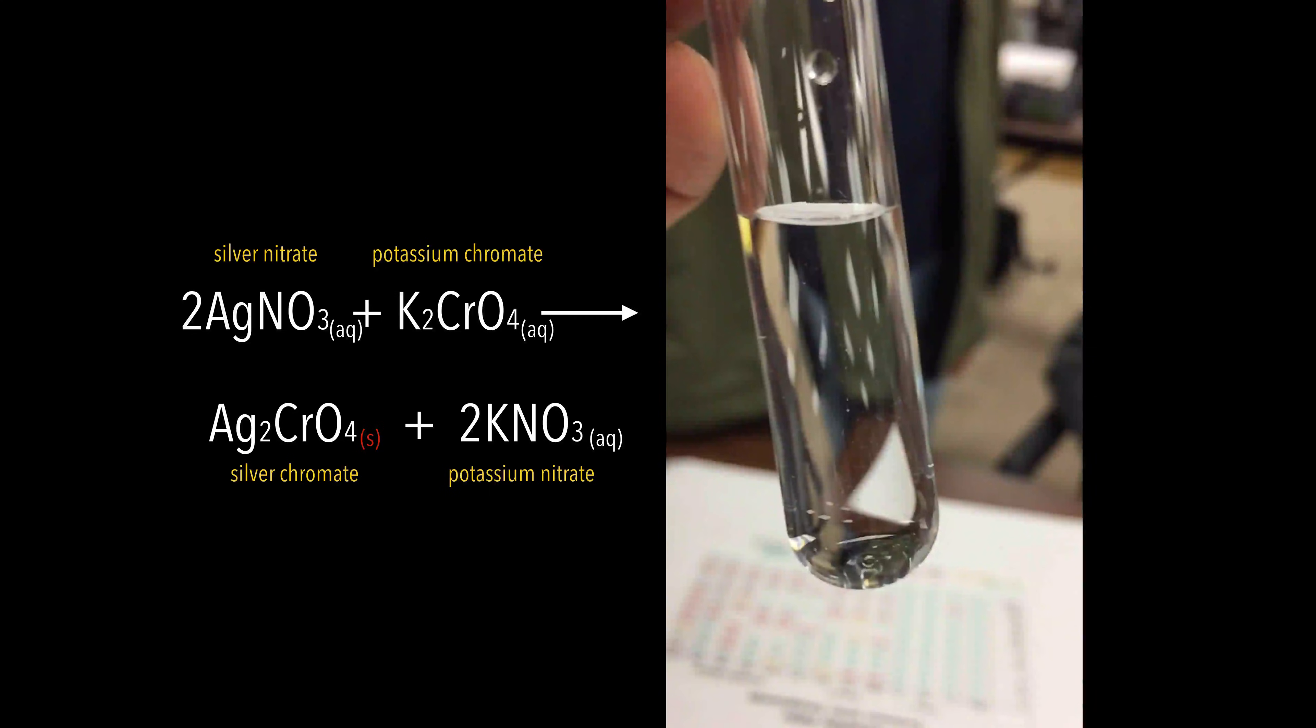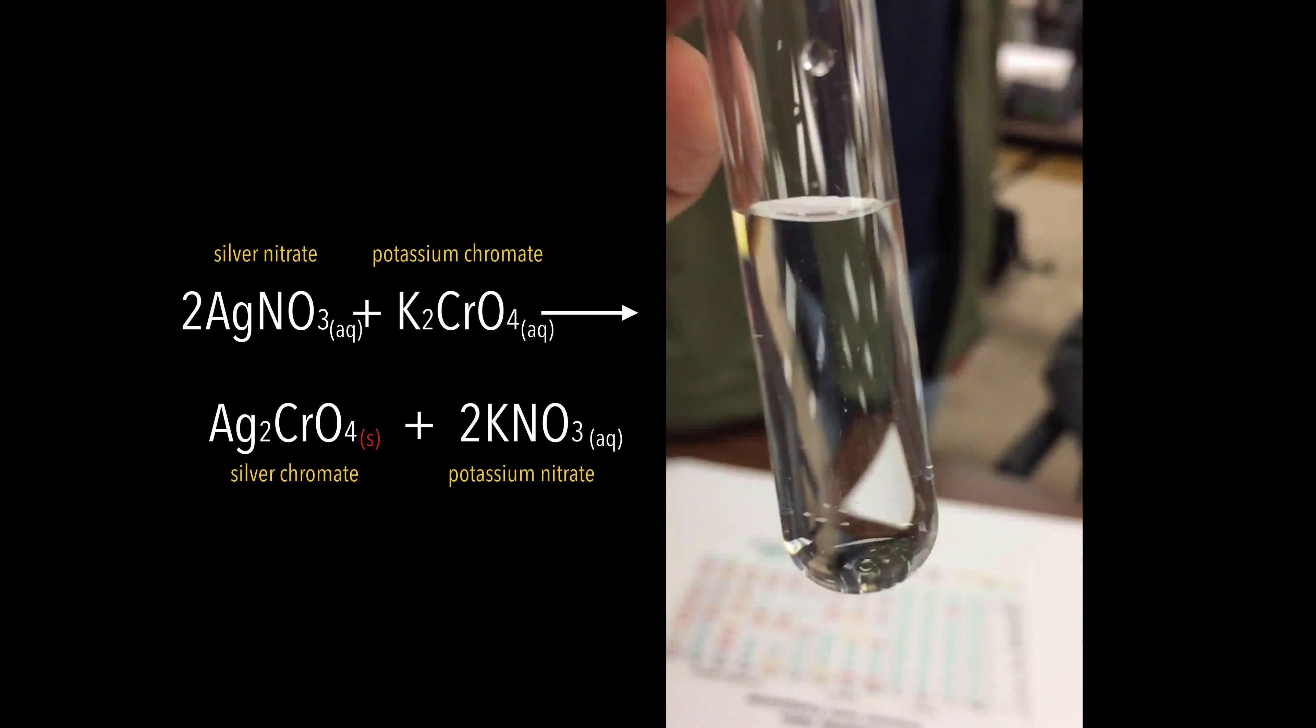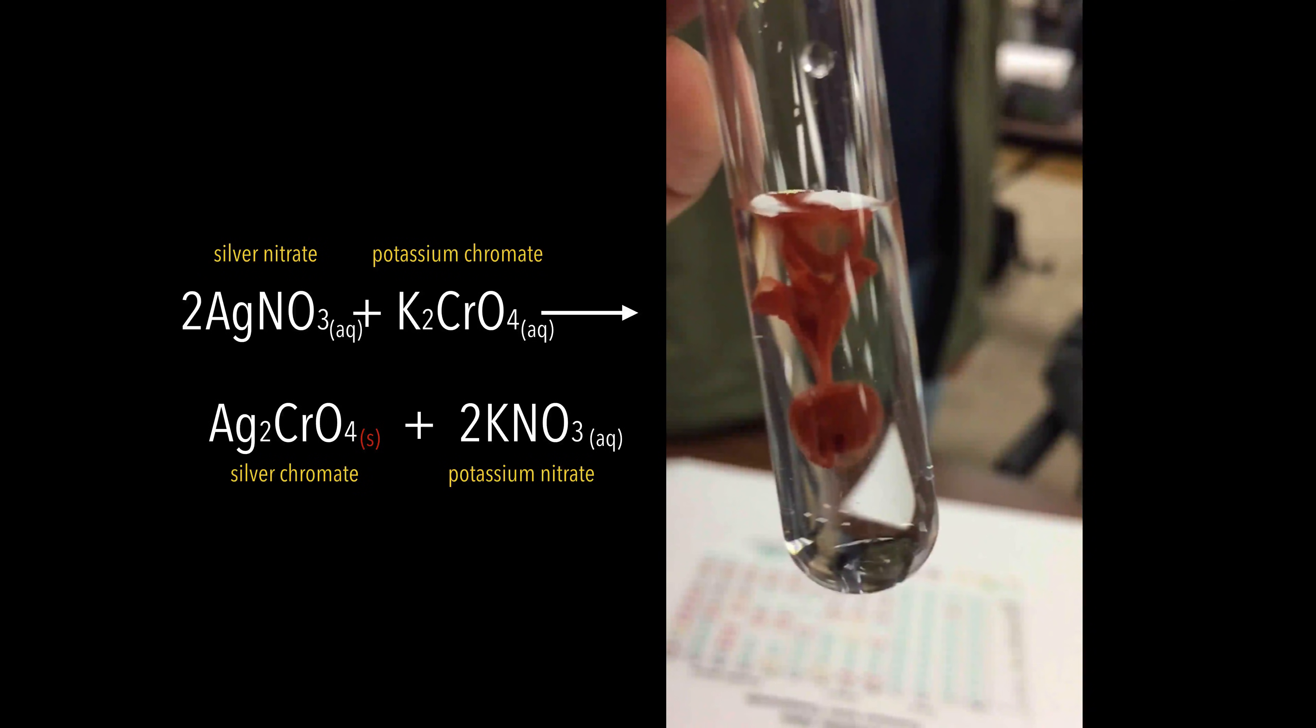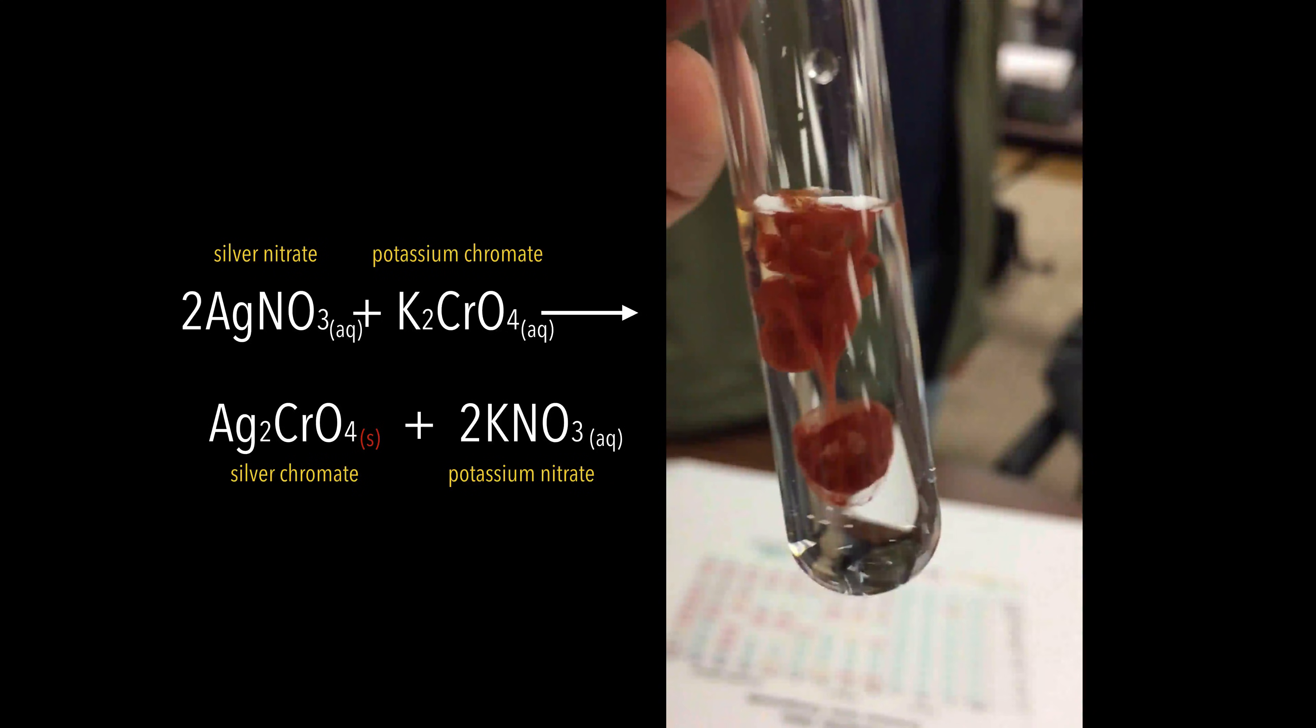Silver nitrate is what you see right now. We're going to blend in potassium chromate. Actually it looks a little yellowish. That's precipitate that's forming, called silver chromate. That's the silver chromate you see forming in this reaction. That's the precipitate.